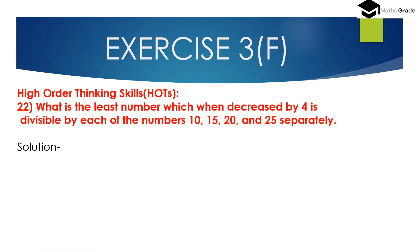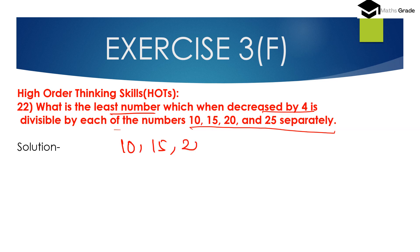Question number 22, High Order Thinking Skills: 'What is the least number which when decreased by 4 is divisible by each of the numbers 10, 15, 20 and 25 separately?' First, find the LCM of 10, 15, 20 and 25.